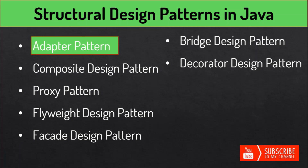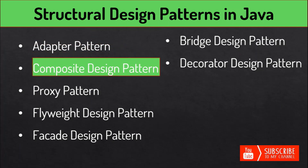The Composite pattern is a structural design pattern that represents a part-whole hierarchy and composes objects into a tree structure. We apply this pattern when we need to create a structure where objects need the same treatment even if they are different. For example, a diagram contains objects like lines, circles, and squares — when we fill the drawing with a color like red, all objects in the drawing also fill with red, even though they are different.